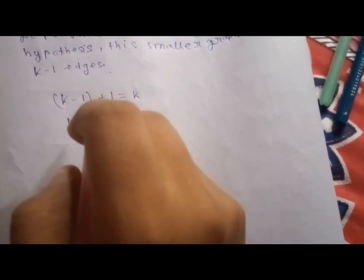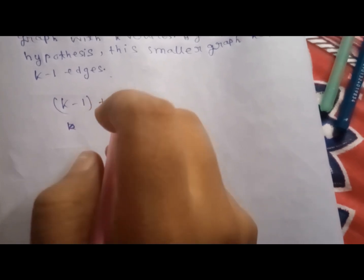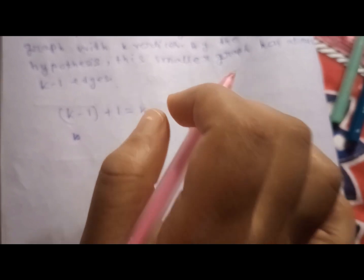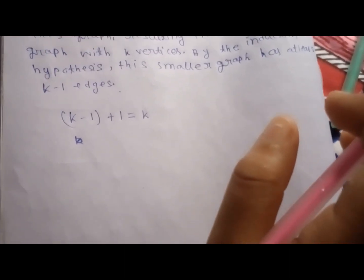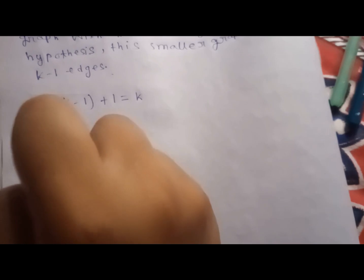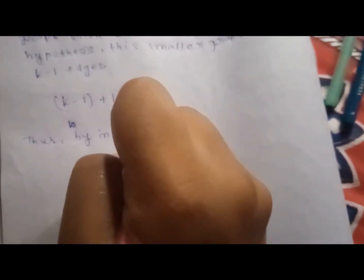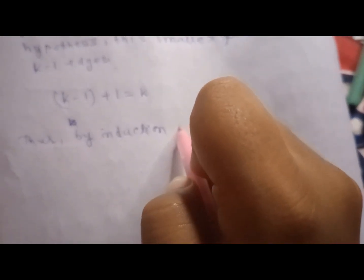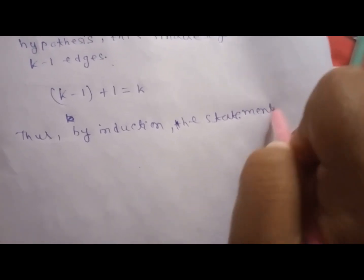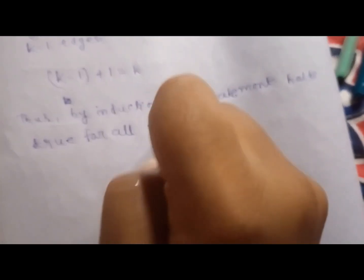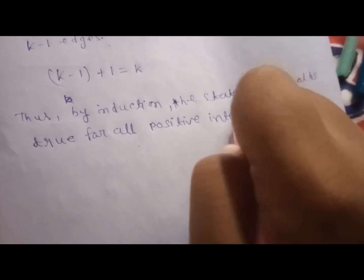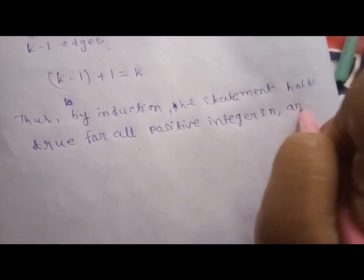Thus, by induction, the statement holds true for all positive integers n, and the minimum number of edges in a connected graph with n vertices is n minus 1.